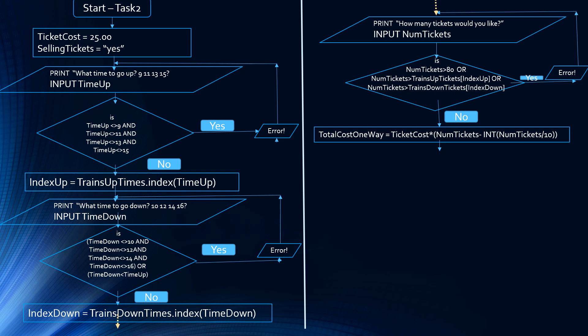It's a validation loop and it will ask them again: how many tickets would you like? If the answer to that decision box is no, we're going to calculate the cost for one way. The total cost one way is equal to the ticket cost — which was 25.00 — multiplied by the number of tickets they asked for, minus the integer division of the number of tickets divided by 10. That accounts for the discount of one free ticket for every 10 tickets.